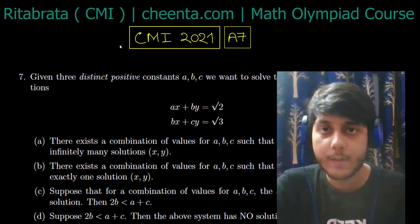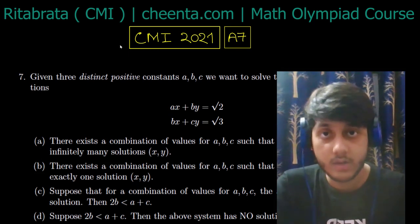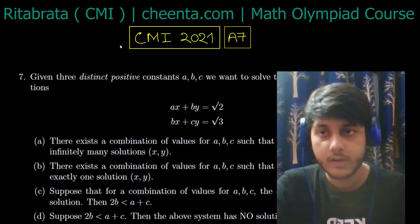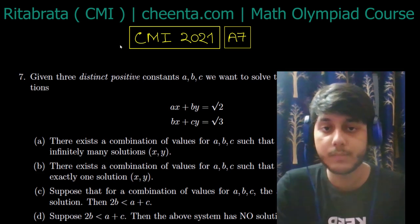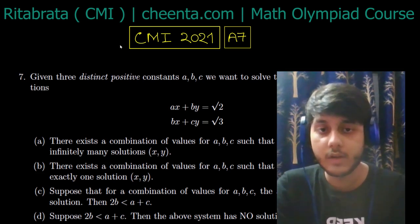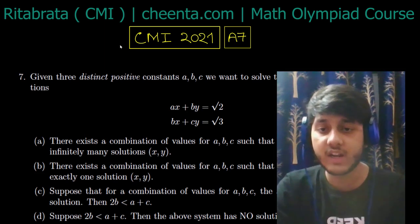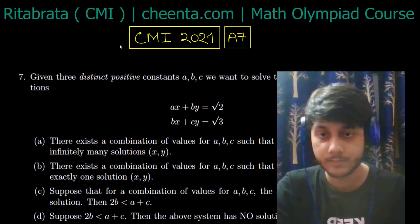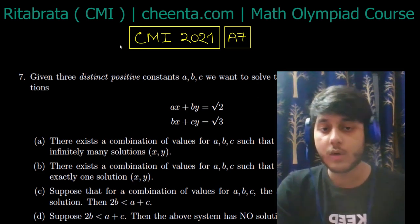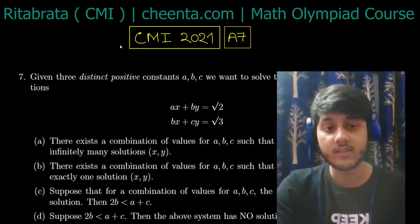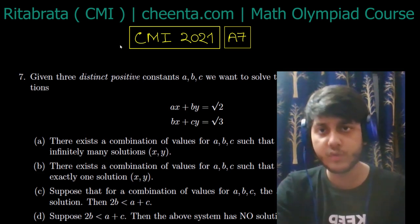Hello, today I want to discuss a problem that appeared in the CMI 2021 entrance exam. This is a problem about a system of linear equations. We have three distinct positive constants a, b, and c. We want to solve the system: ax plus by equals root 2, and bx plus cy equals root 3. We have to determine if there exists a combination of a, b, c such that the system has infinitely many solutions or exactly one solution. We also need to determine if the system has no solution, whether 2b less than a plus c holds, and whether the converse is true.